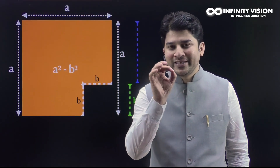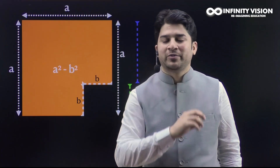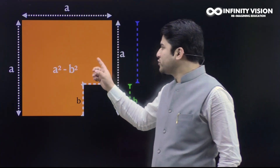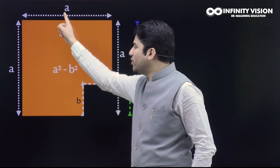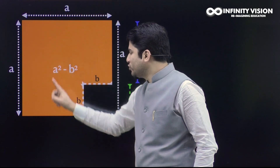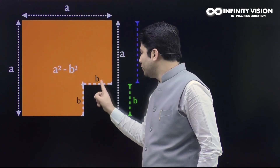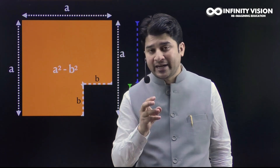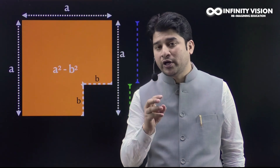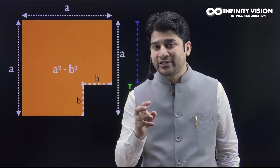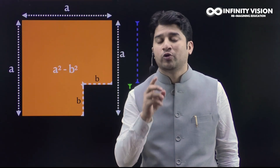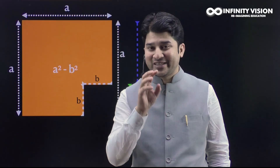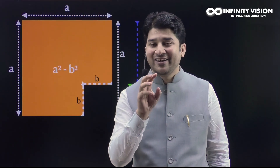Now if I ask you what is this new shape, you can say it's a closed figure. How many sides does it have? One, two, three, four, five, six — a closed figure with six sides, so a polygon with six sides. What do you call it? You call it a hexagon. It's a funny-looking hexagon, but it's definitely a hexagon.